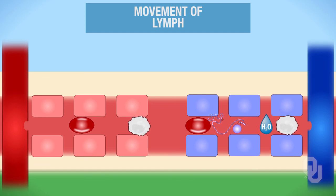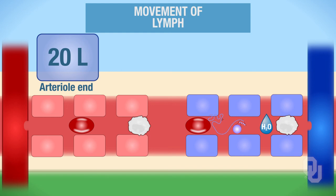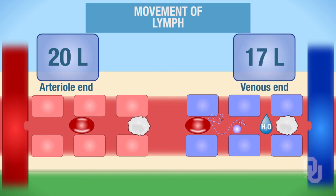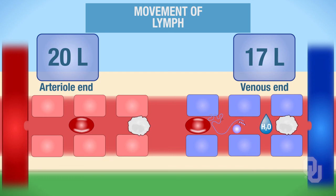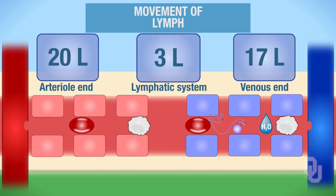Now let's think about the volume of fluid that will be filtered. Here at the arterial end of the capillary, about 20 liters of fluid gets filtered. About 17 liters is reabsorbed at the venous end of the capillary. So that leaves about 3 liters in the lymphatic system.